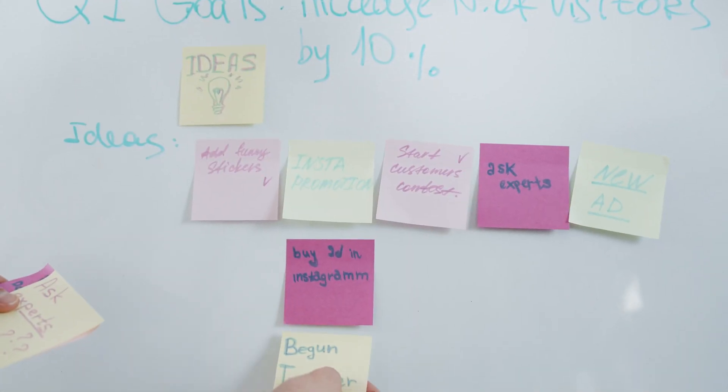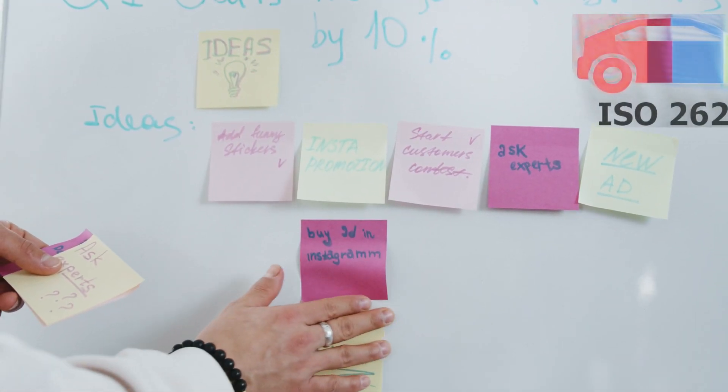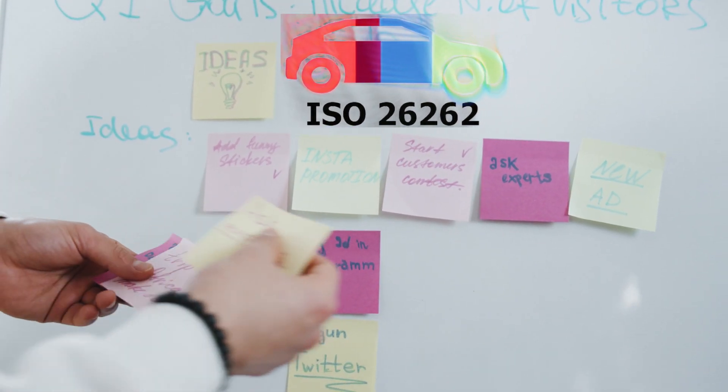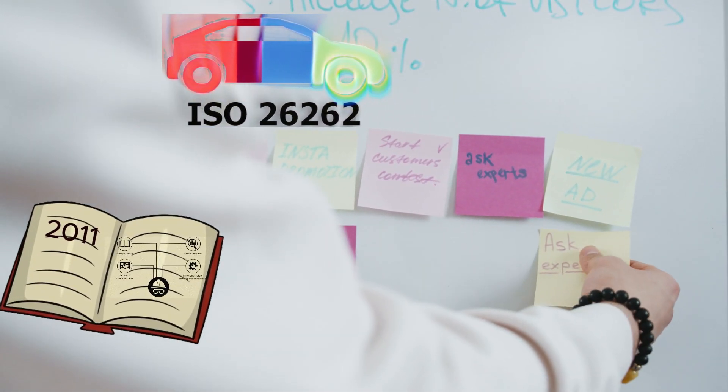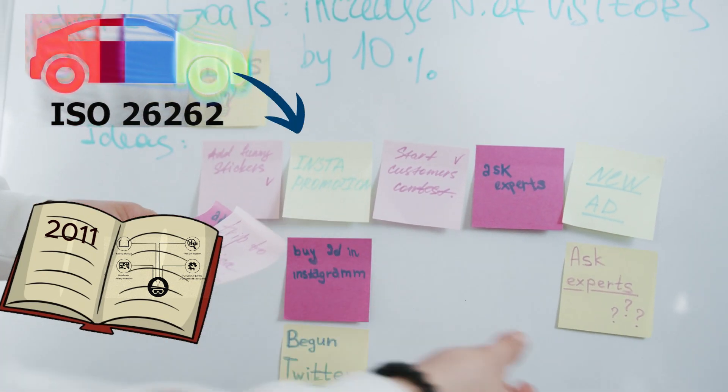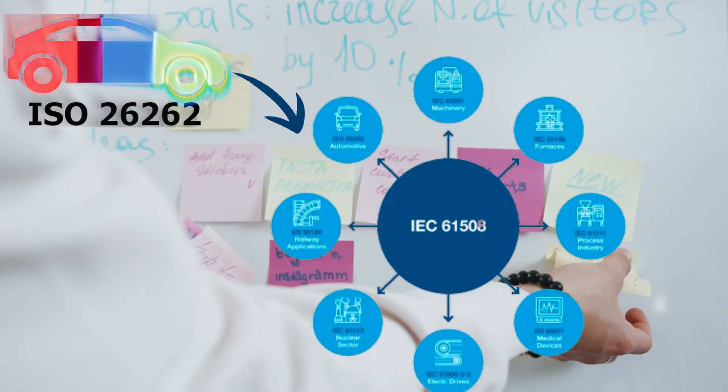ISO 26262 is a specialized international standard for automotive safety that was published in 2011 after being derived from a general safety standard for electrical systems called IEC 61508.